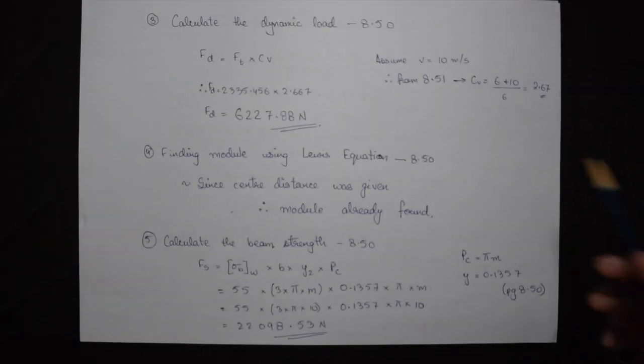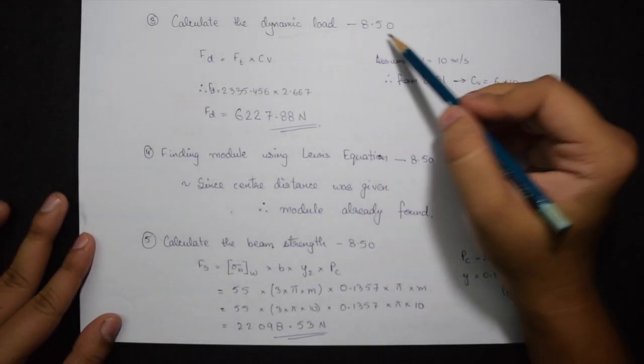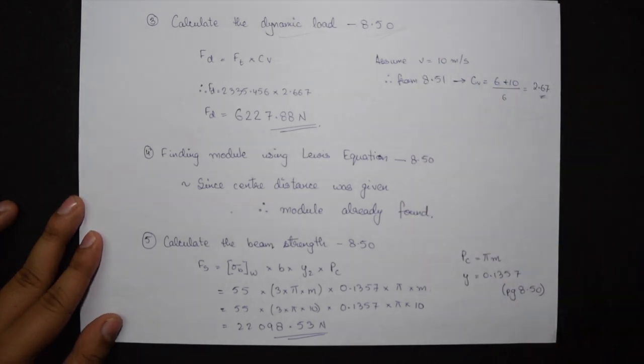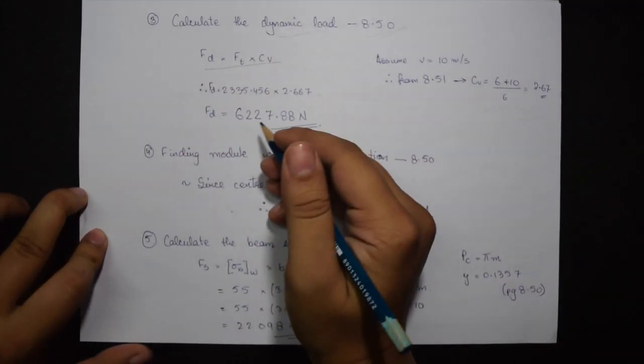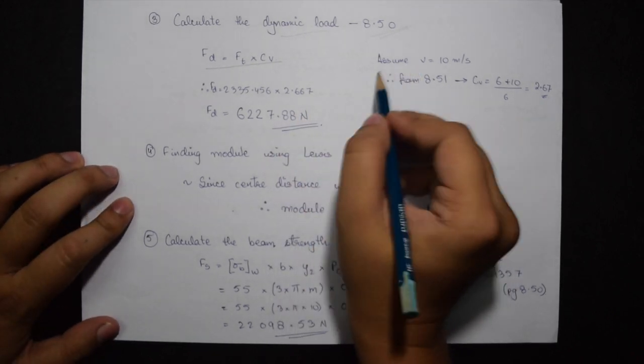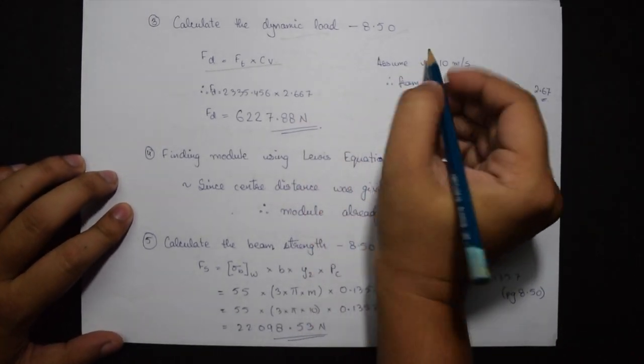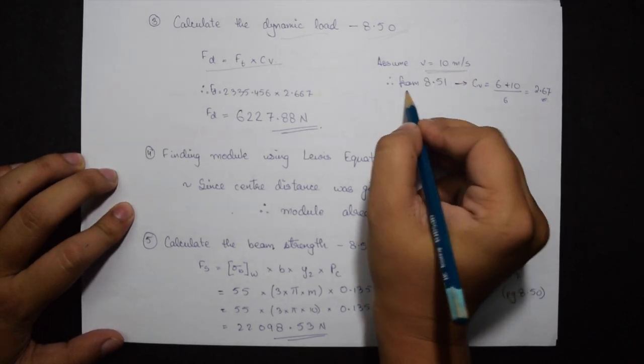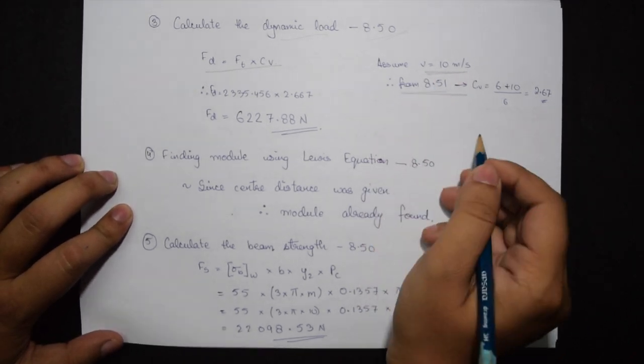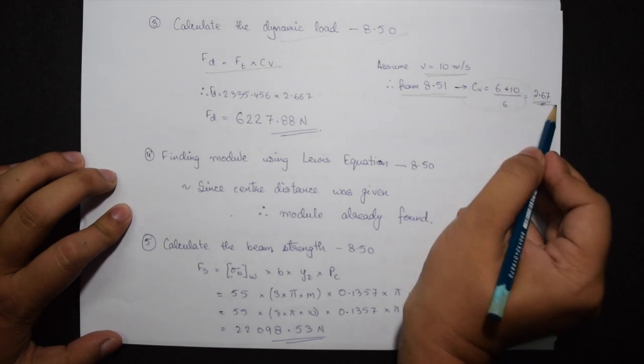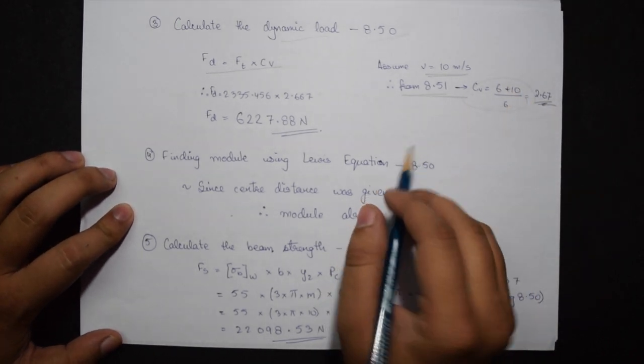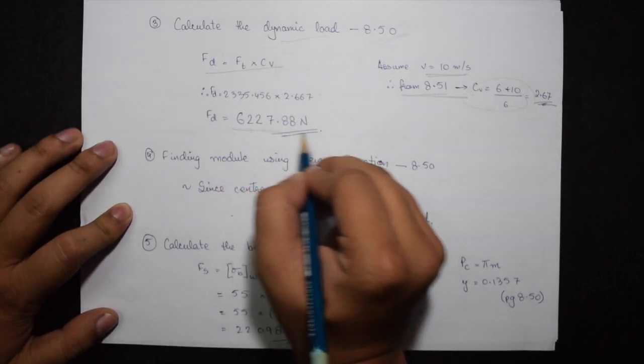Step 3 says calculate the dynamic load. The formula again is given on 8.50 only. FD equals FT into CV. FT we just calculated in the last step. Now again we'll be assuming V as 10 meter per second. So from page number 8.51 I have this formula. The value of CV becomes 2.667. Therefore FD is calculated as 6227.88 newtons.